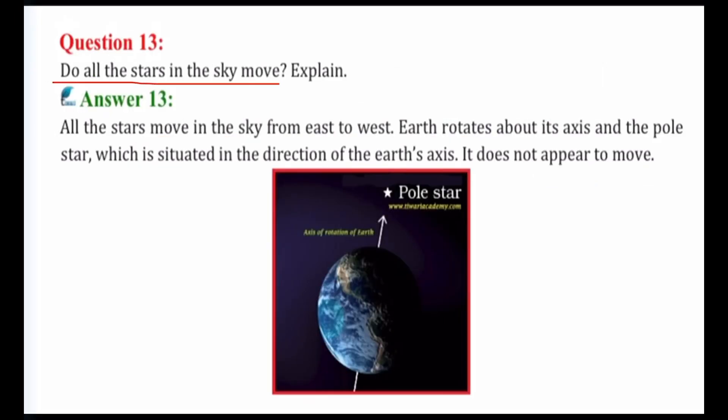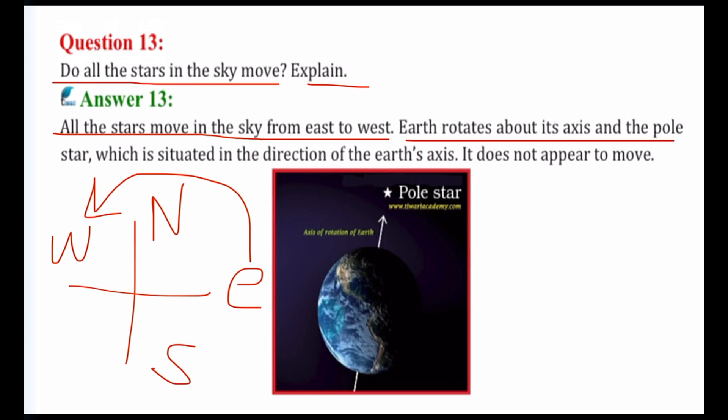Next is question number 13. Do all the stars in the sky move? Explain. This is a tricky question. You have to explain whether stars in the sky move or not. All the stars move in the sky from east to west. Very important - direction is east to west. Earth rotates about its axis and the pole star which is situated in the direction of Earth's axis, it does not appear to move.